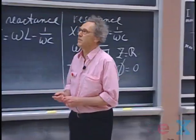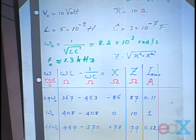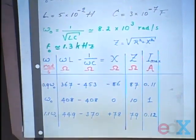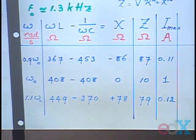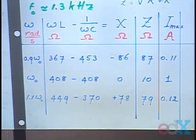The maximum current is V₀/Z = V₀/87, which is 0.11 amperes. Now at resonance, ωL and 1/ωC have exactly the same value — they cancel — so X becomes zero, the impedance becomes just 10 Ω (the resistance), and the maximum current is V₀/R = 1 ampere. When you are 10% above resonance, the self-inductor becomes more powerful than the capacitor, and again the current is substantially down — in this case about eight times lower than at resonance.